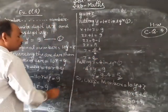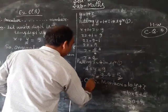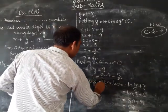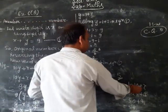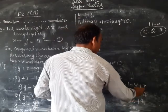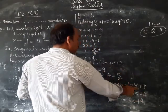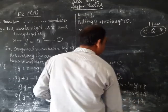x equals 4, y equals 5. So our original number equals 10y plus x, which is 10 times 5 plus 4 equals 50 plus 4 equals 54.